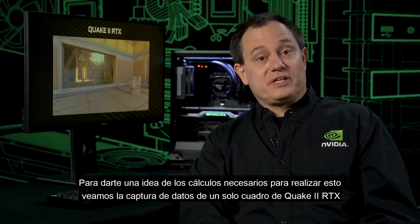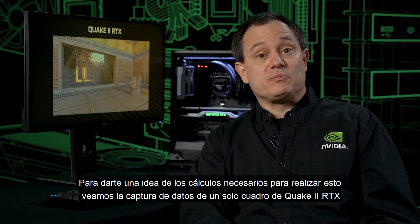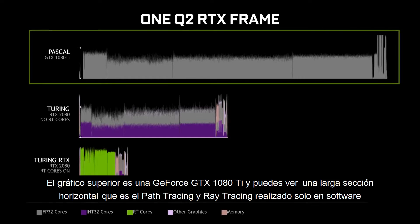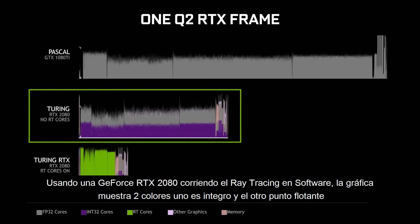To give you a feel for the computational power required to do this, let's dive into a data capture of a single frame from Quake 2 RTX. We've used our performance analysis tools to capture and analyze the frame. The topmost graph is a GeForce GTX 1080 Ti, and you can see the long horizontal section where ray tracing and path tracing are done entirely in software. The next chart down is the same analysis on the Turing architecture, using a GeForce RTX 2080, also running ray tracing in software.